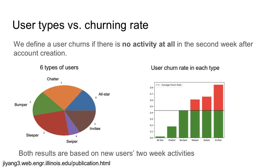For example, the all-star users are active in every perspective and therefore have a very low churn rate. However, the sleepers, swipers, and invitees are less active in certain perspectives, and therefore they are more likely to quit the usage of the social app after a certain time.